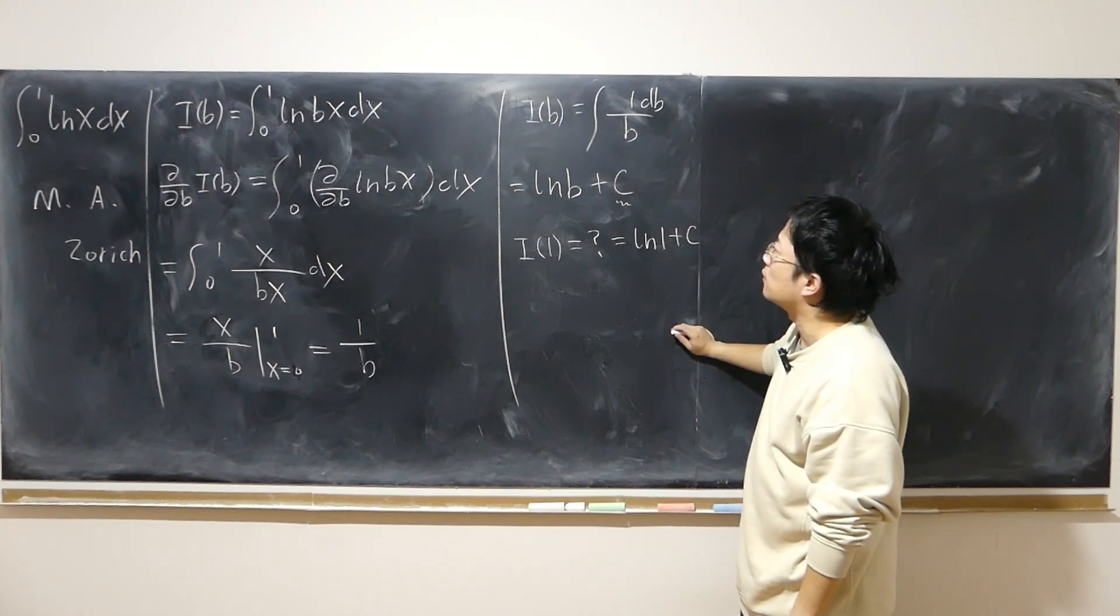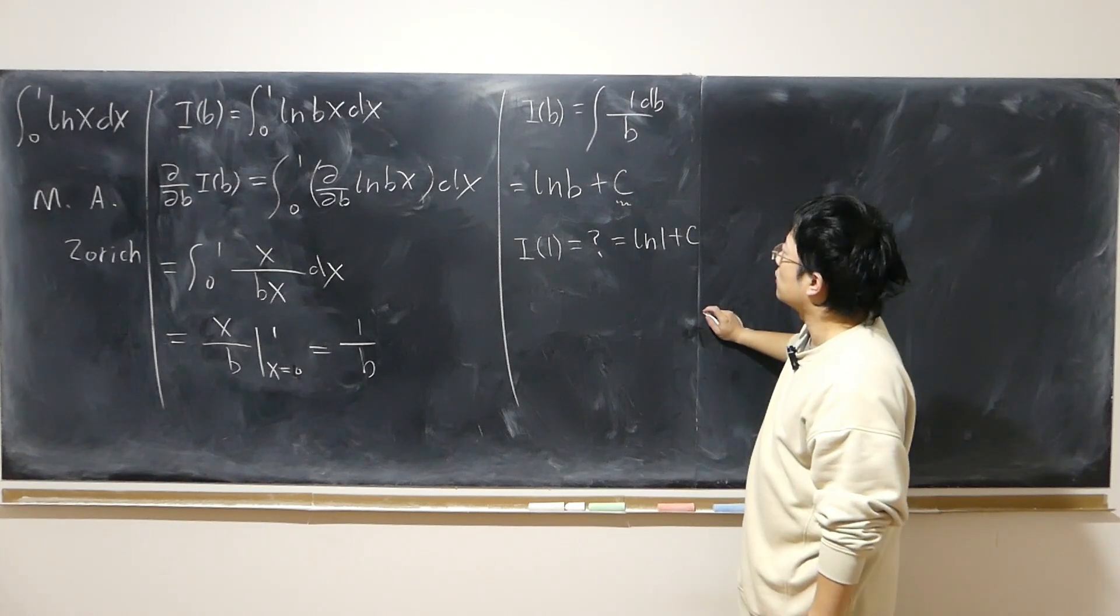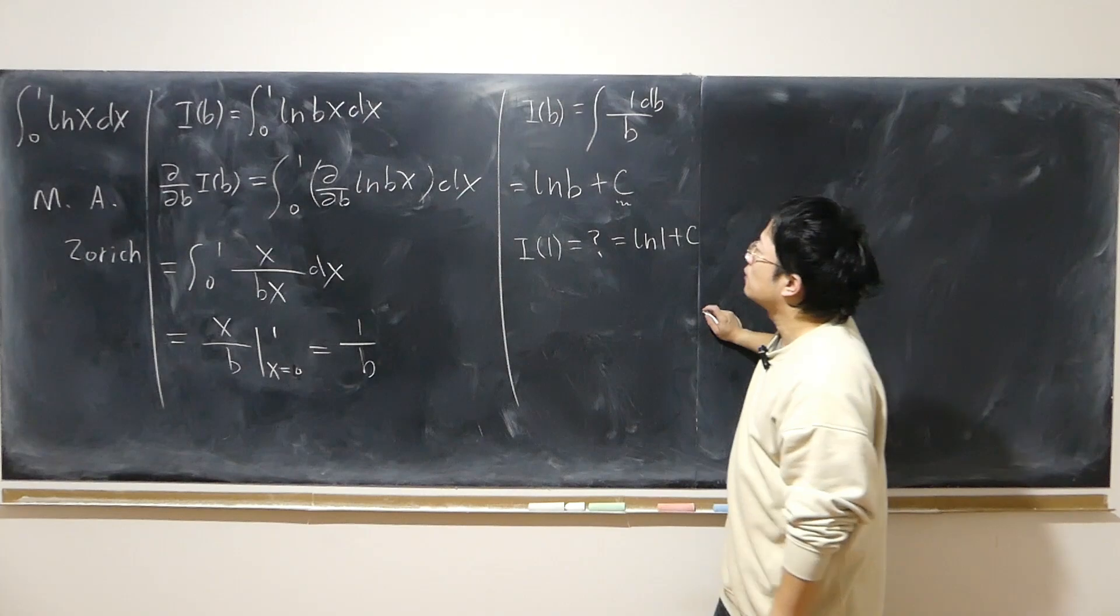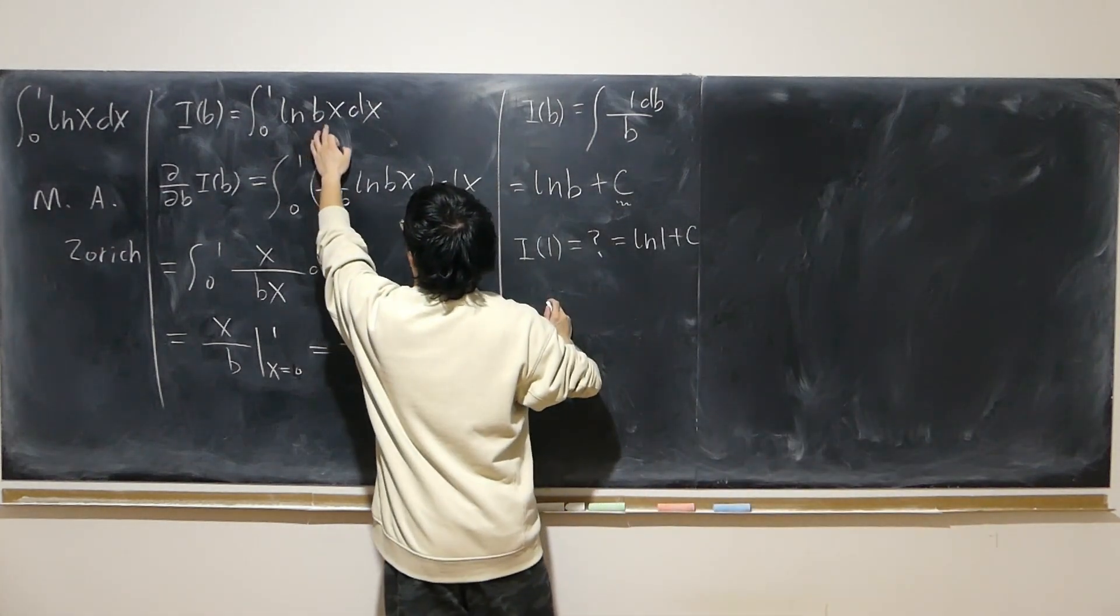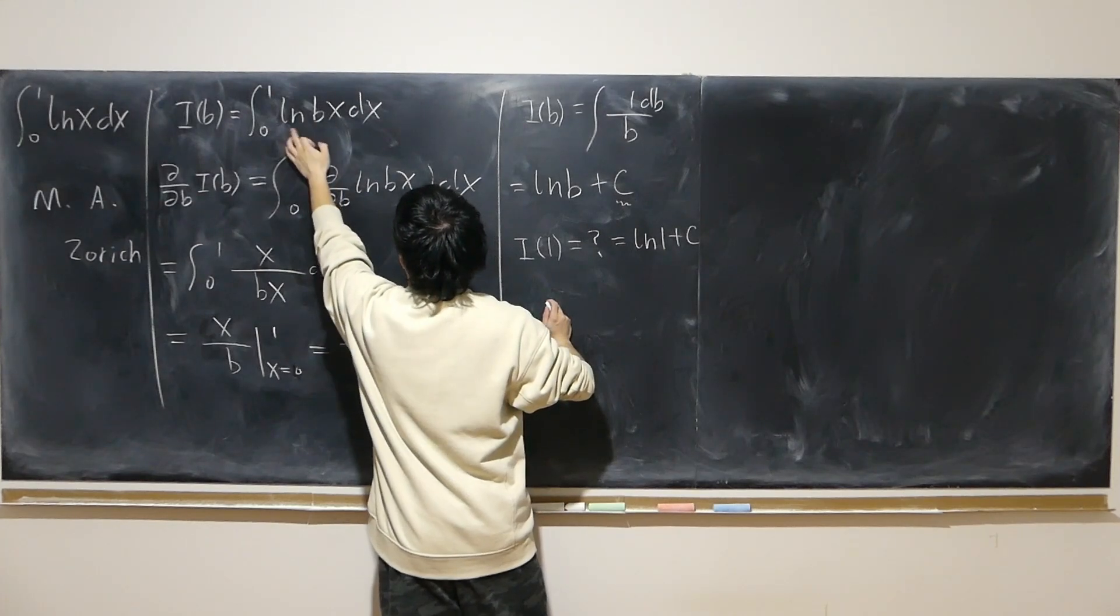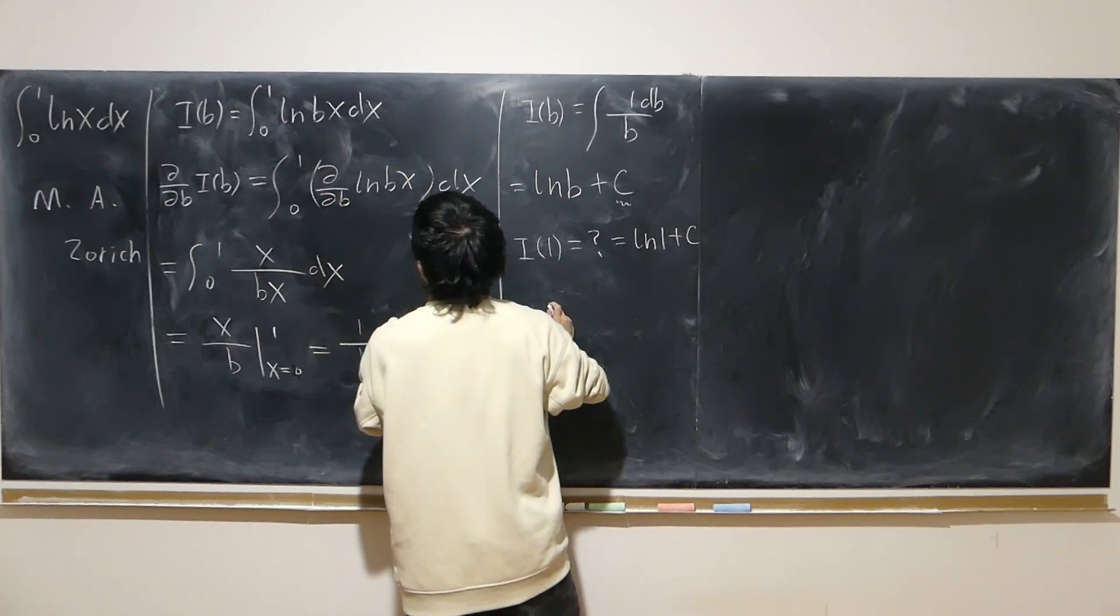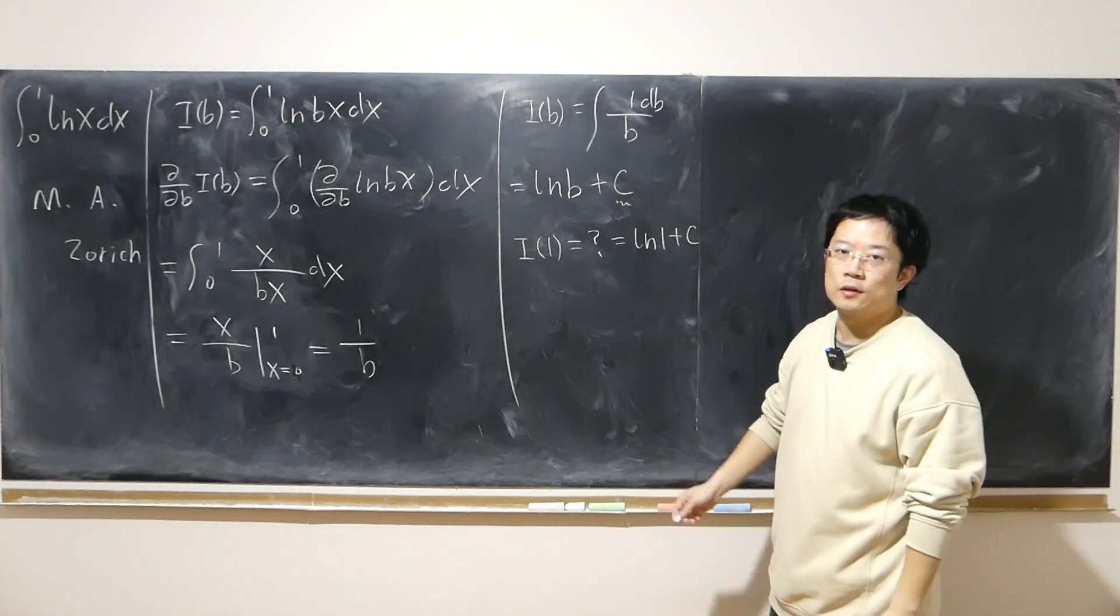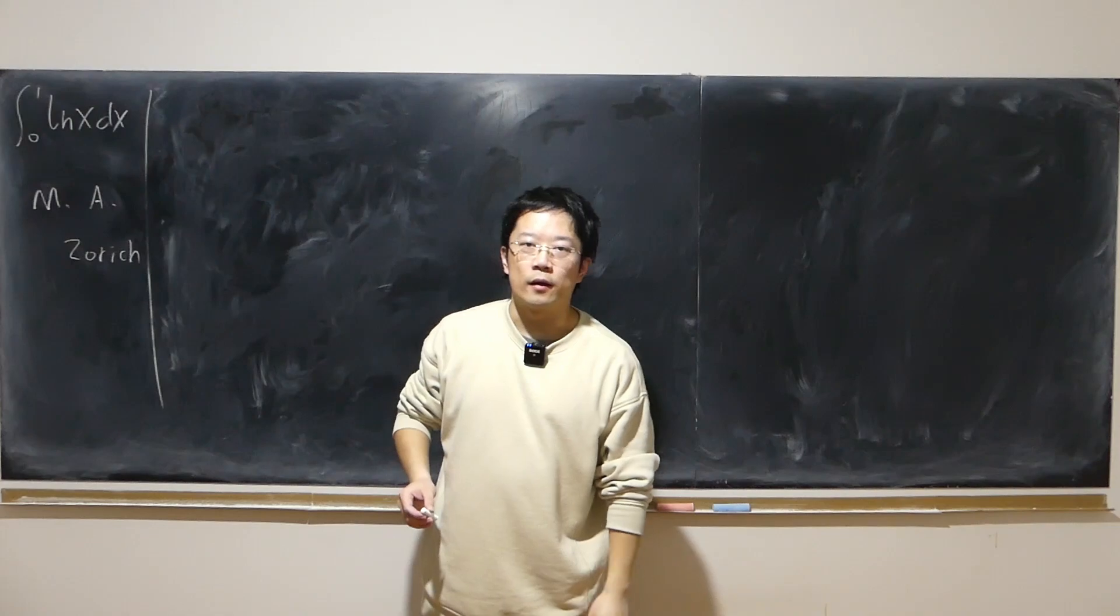b equal to 1, plug into there. No, not helpful. I want to achieve log of 1 somehow. What kind of b gives me log of 1? No way. So in this case, it's impossible for us to determine the value of c.